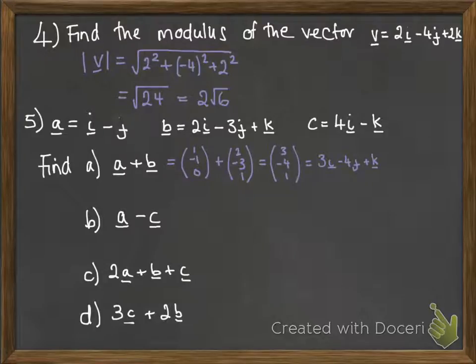So you can see we've got 1 plus 2, hold on, no sorry, not a mistake, just me reading it wrong. 1 plus 2 makes the 3, minus 1 plus minus 3 makes the minus 4, and 0 plus 1 makes the 1. And then we need to put it back into the IJK form, because that's how it was given to us in the question.